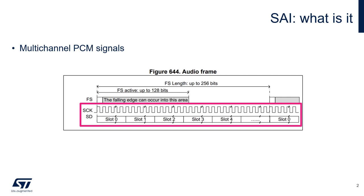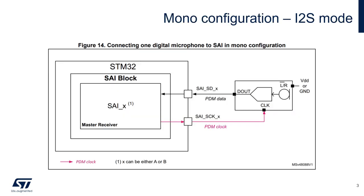Let's start with a quick recap about the I2S mode. A single digital microphone can be connected to the SAI block when it's configured in I2S mode, exactly as we saw in the previous video. The SAI is configured in master receiver mode and provides the clock to the digital microphone. Audio samples are acquired through the serial data pin. Data acquired in this way can be directly converted to the PCM format using the PDM to PCM library for STM32. There are no more constraints on the configuration of the left-right pin as long as the SAI clock polarity is configured correctly.